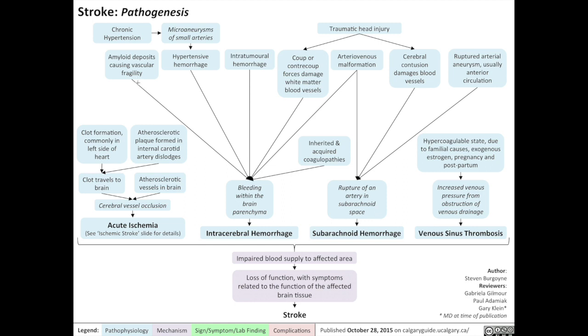Amyloid deposits, causing vascular fragility, can also cause the rupture of blood vessels within the brain, resulting in bleeding within the brain parenchyma. There can also be tumors in the brain that hemorrhage, leading to intracerebral hemorrhage. Traumatic head injuries can cause coup or contracoup forces that damage blood vessels within white matter, leading to bleeding within the brain parenchyma. Arteriovenous malformations can spontaneously bleed within the brain parenchyma. In addition, issues outside the brain, such as inherited and acquired coagulopathies, can cause bleeding anywhere within the body, and if it occurs within the brain parenchyma, that will also lead to an intracerebral hemorrhage.